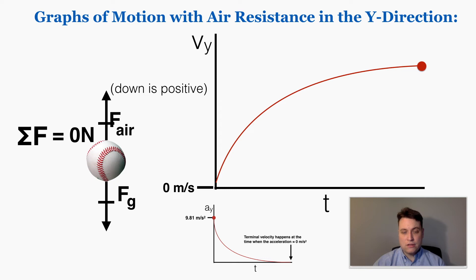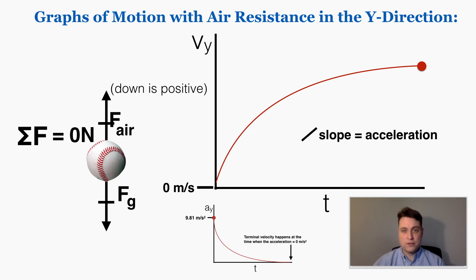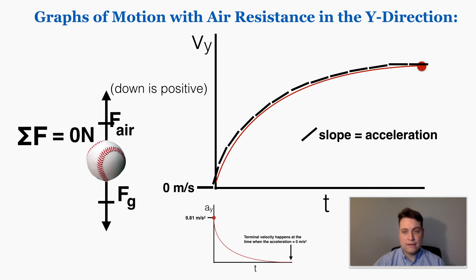We can understand the velocity graph by referring back to the acceleration graph. The slopes of the tangent lines on a velocity graph represent the acceleration. So if the acceleration starts very positive but rapidly decreases, the slopes of the tangent lines also start very positive but rapidly decrease. As they keep going, they decrease at a slower and slower rate, approaching zero. The point where the acceleration is zero is where the velocity graph has a flat slope — staying at that constant velocity. That constant value is the terminal velocity of the object.